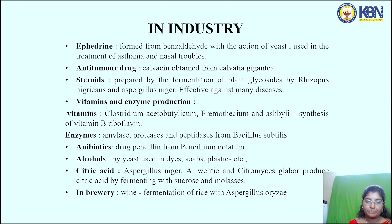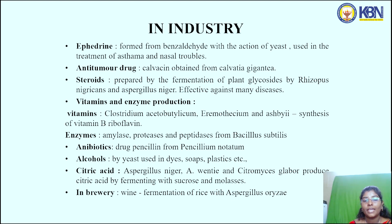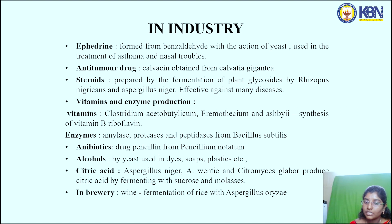For vitamins and enzyme production: Clostridium butylicum and Eremothecium ashbyii are helpful in the synthesis of vitamin B riboflavin. Enzymes such as amylase, proteases, and peptidases are prepared from Bacillus subtilis. Antibiotics like penicillin are from Penicillium notatum, and alcohols produced by yeast are used in dyes, soaps, and plastics.